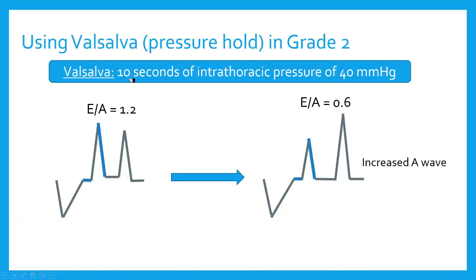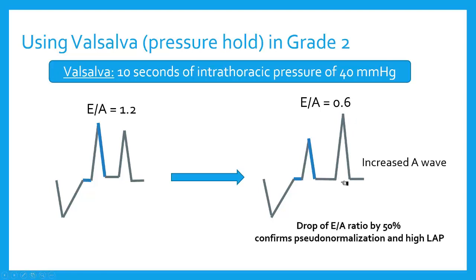One cool thing you can do — we don't do this in the ICU very often — is if you do a Valsalva for 10 seconds with intrathoracic pressure of 40 millimeters of mercury, you can take this pseudonormalized ratio and make it look like grade 1 diastolic dysfunction again. So in grade 2, I have an E to A ratio greater than 0.8. But if I have my patient Valsalva, I'm going to decrease left atrial pressure and decrease preload, so my E to A is going to go back to this grade 1 type physiology where the A velocity becomes predominant. A drop of an E to A ratio by 50% is confirmed pseudonormalization, which also confirms high left atrial pressure, because you only get this degree of E to A change if you actually have left atrial pressure elevation.